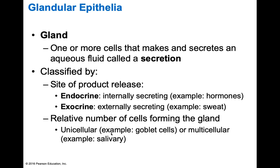Glandular epithelia is our second type of epithelia. A gland is one or more cells that makes and secretes an aqueous fluid called a secretion. We can classify glands by the site of product release — either endocrine or exocrine — or by the relative number of cells forming the gland: unicellular or multicellular. Endocrine means internally secreting, such as hormones. Exocrine is externally secreting, such as sweat. For unicellular glands, an example is a goblet cell. For multicellular, an example is a salivary gland.